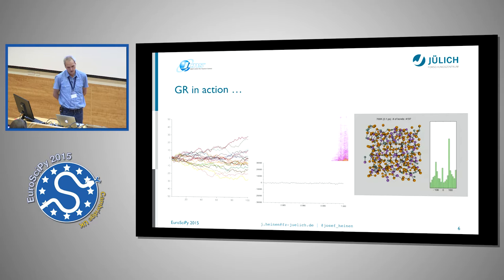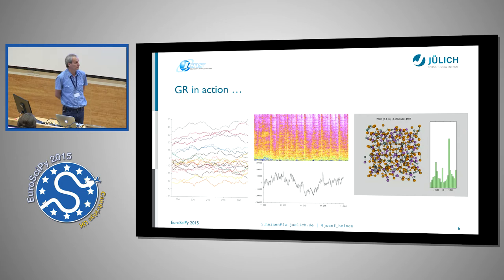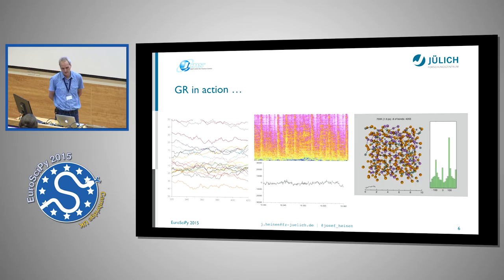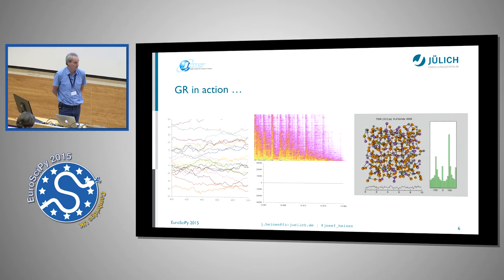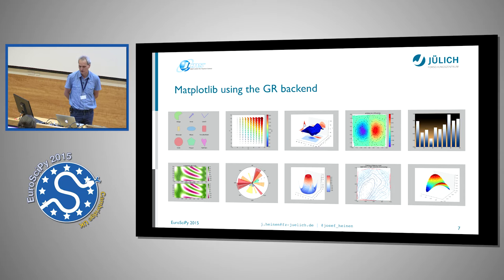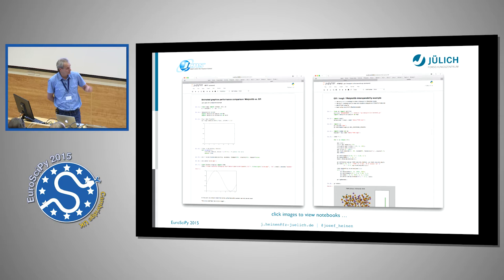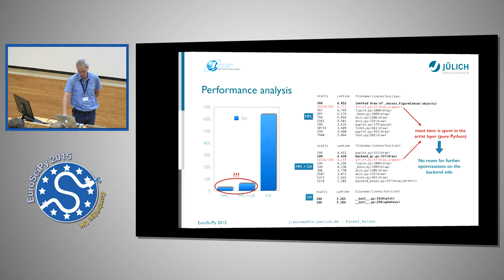Here you can see the GR framework in action. There is a similar example to what Brian showed, but the difference is that we use simple Matplotlib calls to visualize such data, and there is no need for an external library. On the right side you can see a mixture of three-dimensional graphics with a Matplotlib histogram, and there is a GR line plot which shows some angles. The Matplotlib backend produces the same output you are used to seeing from other backends, and I have not seen any big problems. The only difference is that it is faster than the existing backends.